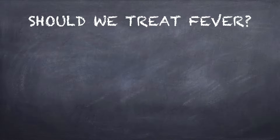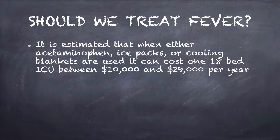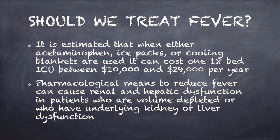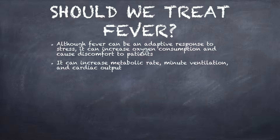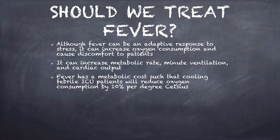Should we treat fever? It is estimated that when either acetaminophen, ice packs, or cooling blankets are used, it can cost one 18-bed ICU between $10,000 and $29,000 per year. Pharmacological means to reduce fever, such as NSAIDs and acetaminophen, can cause renal and hepatic dysfunction in patients who are volume-depleted or who have underlying kidney or liver dysfunction. Although fever can be an adaptive response to stress, it can increase oxygen consumption and cause some discomfort to patients. It can also increase metabolic rate, minute ventilation, and cardiac output. Fever has a metabolic cost such that cooling febrile ICU patients will reduce oxygen consumption by about 10% per degree Celsius.